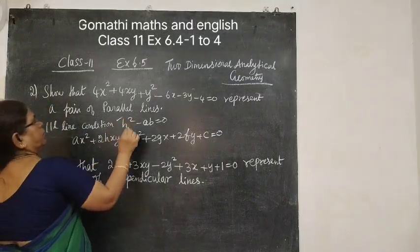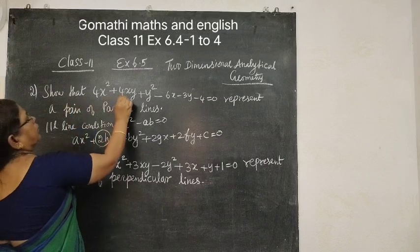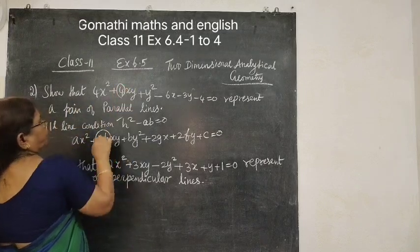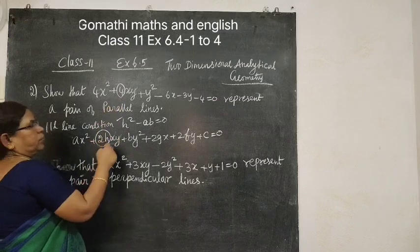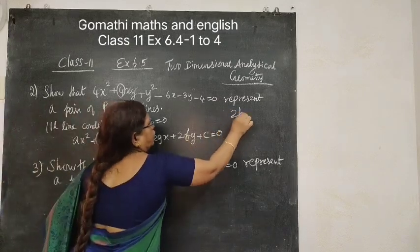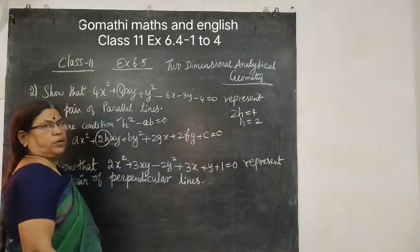Where is H? So 2H is the coefficient of XY here. 2H is 4. So 2H equal to 4, therefore H equal to 4 by 2 equal to 2.